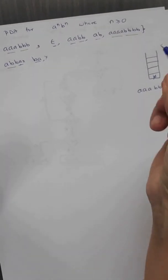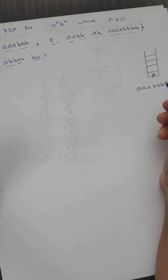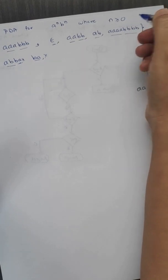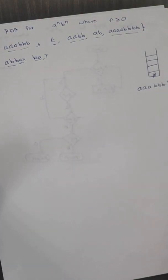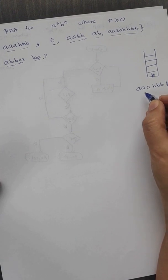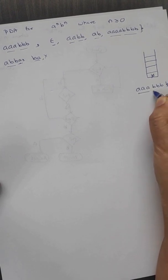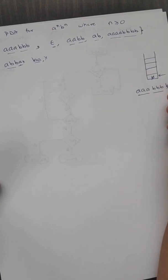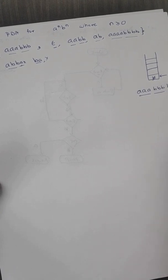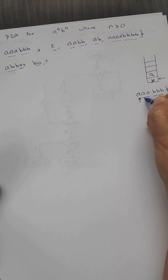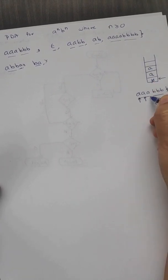We want a PDA to be developed for this language, and remember that n is greater than or equal to zero, so the epsilon string is a valid string. We'll simulate the algorithm using a stack for the string 'aaabbb'. Z0, the end of stack, is indicated by a blank symbol. When we get the first a from the input string, we push it onto the stack; the second a is also pushed, and the third a is pushed onto the stack.